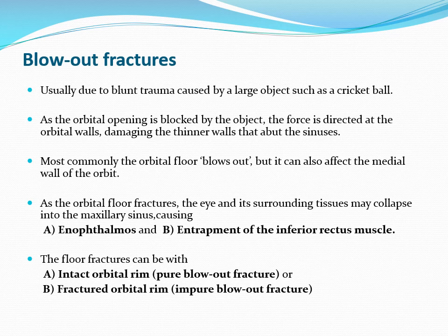The weakest bone is the lamina papyracea of the medial wall — the commonest site of fracture. The next most common is the floor. The orbital rim is supposed to be intact, so rim fracture does not happen, but the wall fractures. The wall fractures in such a way that there is gaping, and in this gaping, muscle entrapment occurs. When all these criteria are fulfilled, it is labelled a blowout fracture.